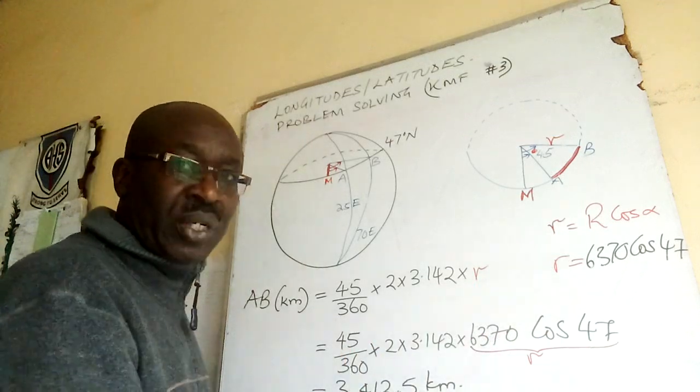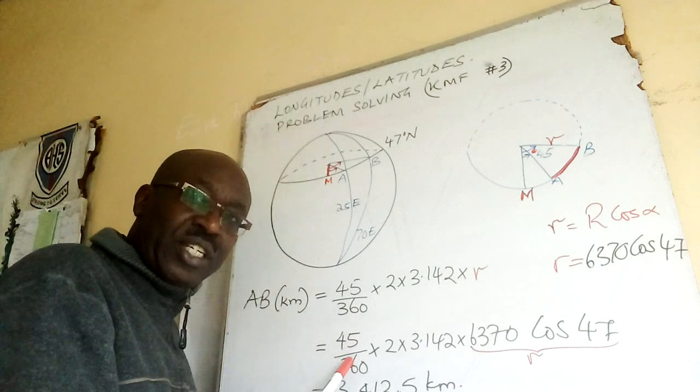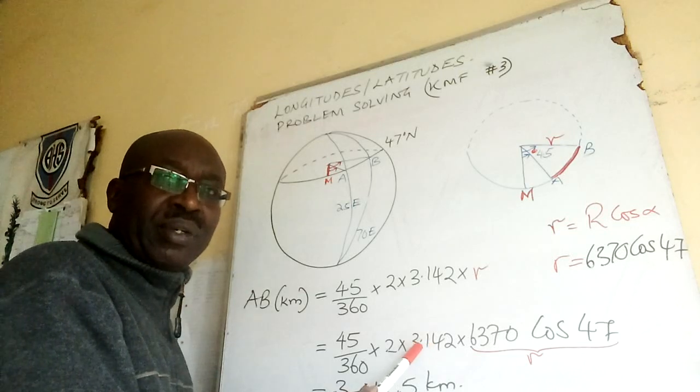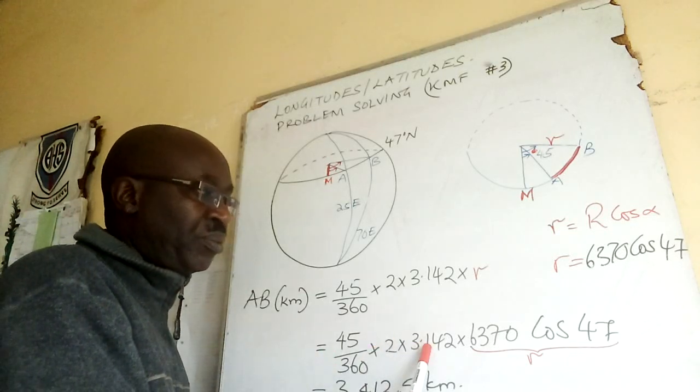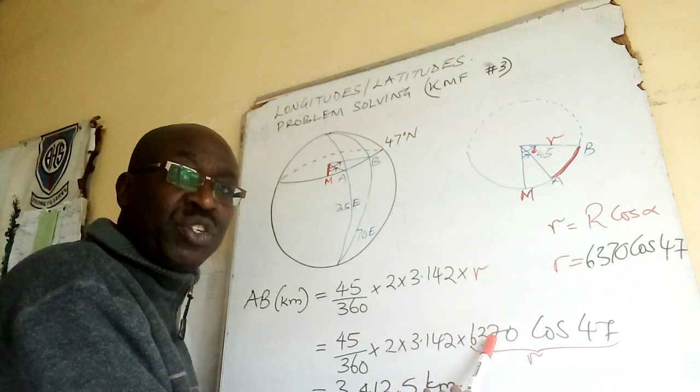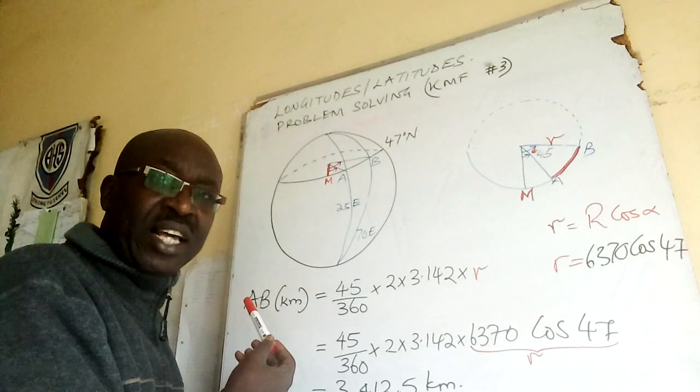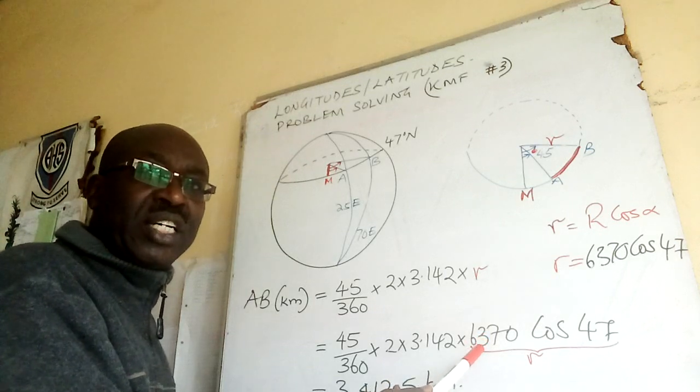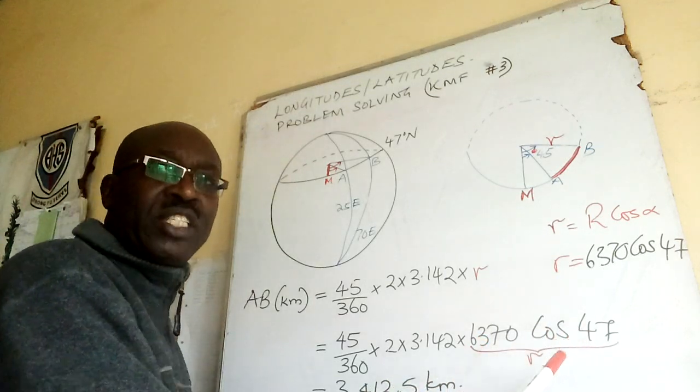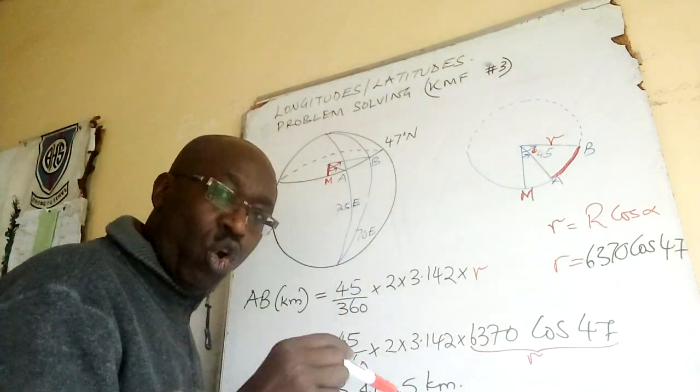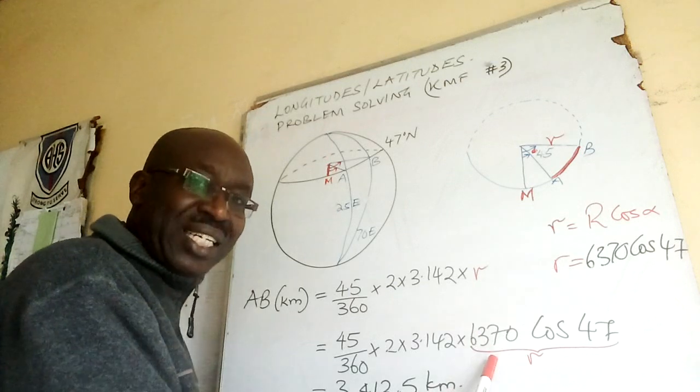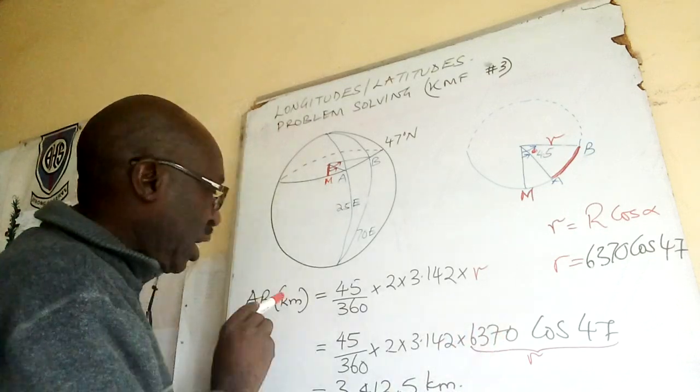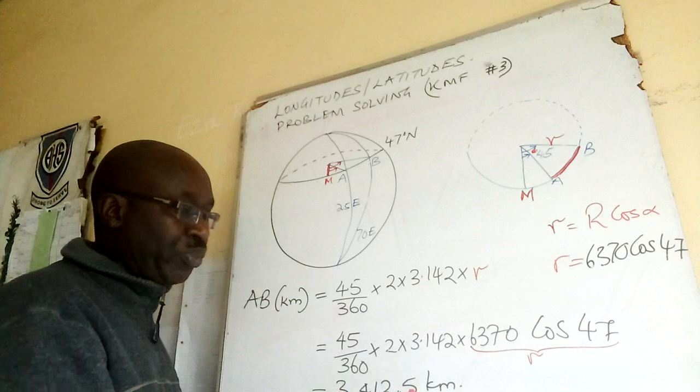Key thing to note, that 45 over 360 has no unit. 2 pi has no unit, these are just numbers, constants. Then 6370 gives you the unit of the length of the arc. In my case this radius is 6370 kilometers. Cos 47 is a ratio, it has no units. So always remember the radius gives you the unit of the arc length.